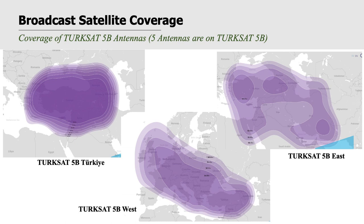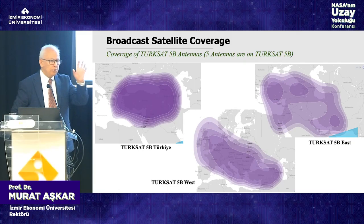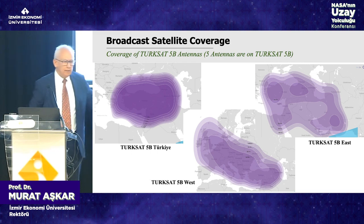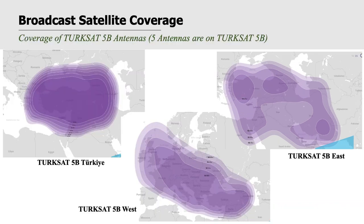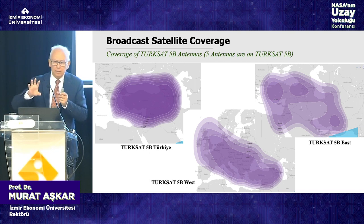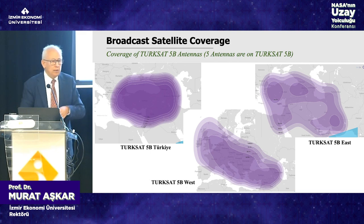Another antenna on the same satellite covers Europe — mid-Europe including Germany, France, Italy — and also Turkey. Your antenna should be directed to this satellite to receive the signal. There are two more antennas being developed using advanced antenna theory so that a single antenna can cover more places with more power, allowing you to use smaller antennas.